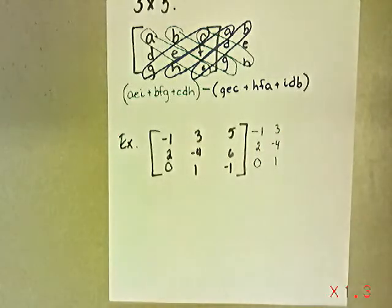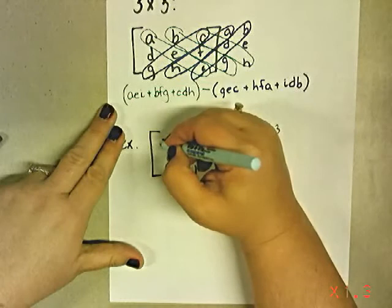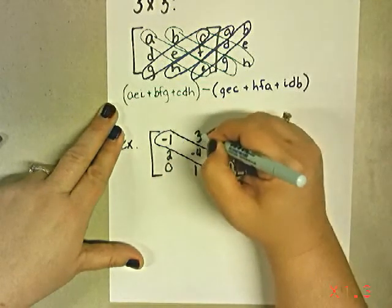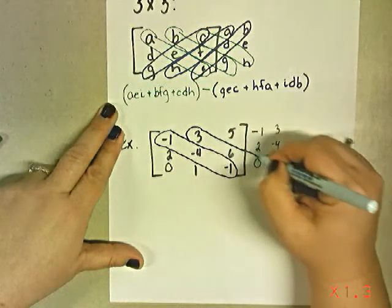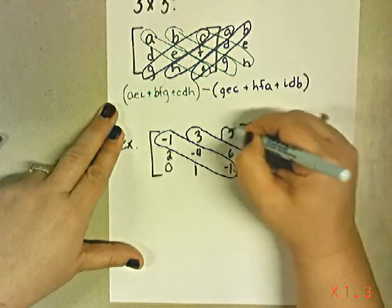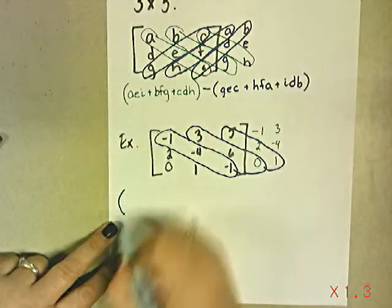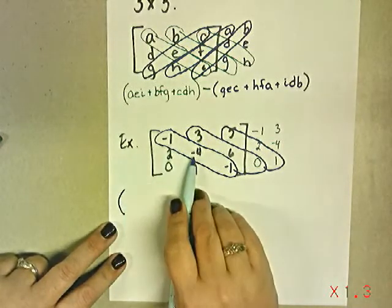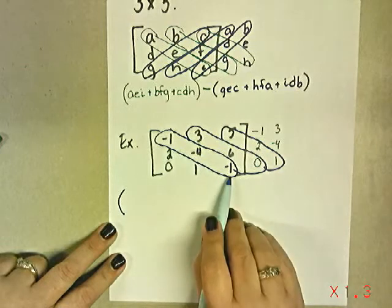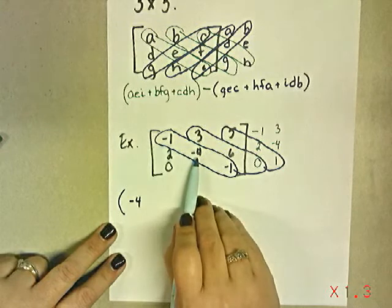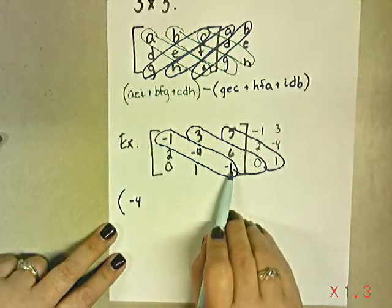And then we start circling our diagonals. So we start in the upper left-hand corner. This is my first diagonal. This is my second diagonal. This is my third diagonal. So, I have negative 1 times negative 4 times negative 1. So that's negative 4. Negative 1 times 4 is positive 4. Times another negative 1 is negative 4.